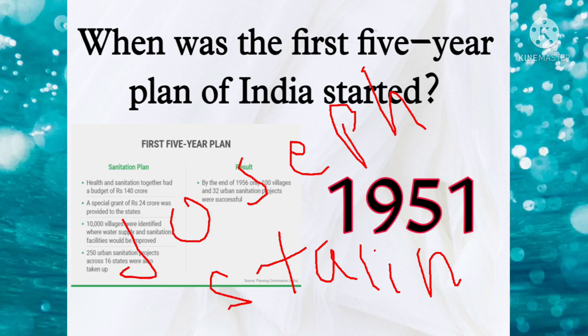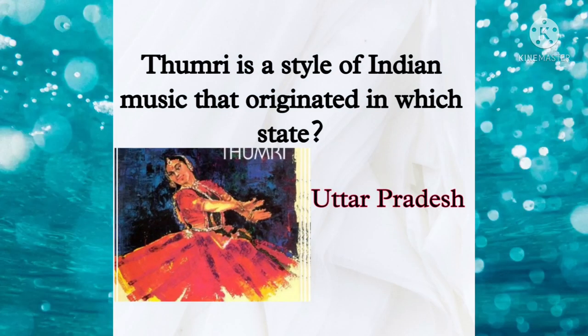Now moving to the next question: Thumri is a style of Indian music that originated in which state? It originated in Eastern Uttar Pradesh, mainly in Lucknow and Banaras. It has romantic lyrics on the life of Radha Krishna, and it is usually performed as the last item of a Khyal concert.